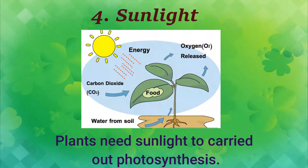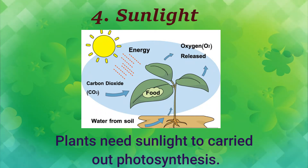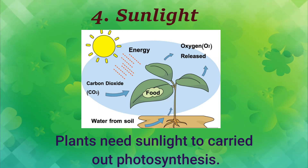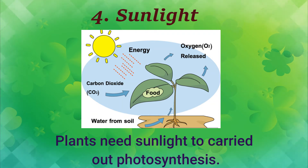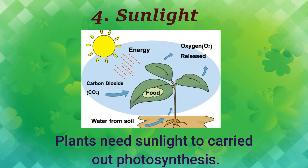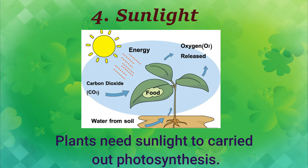The next basic need is sunlight. Sunlight is the major source of energy for plants. Plants need sunlight to carry out photosynthesis. Without sunlight, plants cannot carry out photosynthesis, cannot prepare their food, and therefore cannot survive.